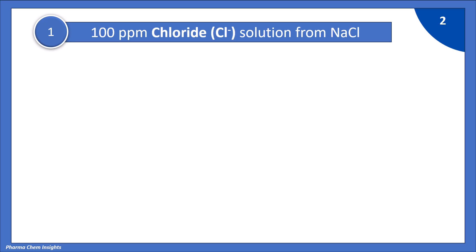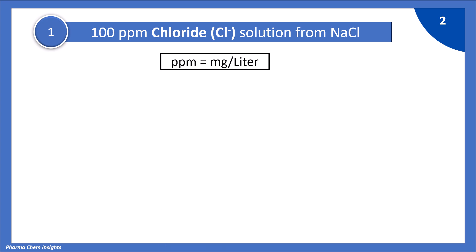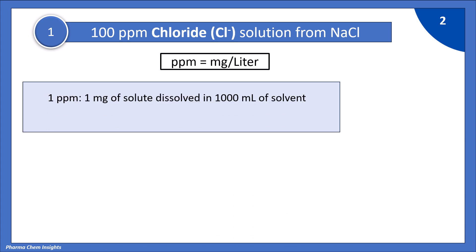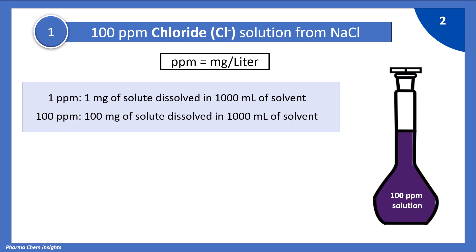To prepare 100 ppm chloride solution, we will first know what is ppm. PPM is equal to mg per litre. So to prepare 1 ppm, 1 mg of solute is dissolved in 1000 ml of solvent. Similarly, to prepare 100 ppm, 100 mg of solute is dissolved in 1000 ml of solvent.